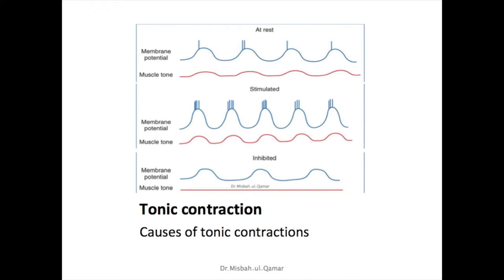The causes of tonic contraction include three factors. First, repetitive spike potentials — greater frequency results in a greater degree of contraction. Second, hormones or certain chemical factors that bring about continuous partial depolarization without causing action potentials. Third, continuous entry of calcium into the cell interior brought about in ways not associated with changes in membrane potential.